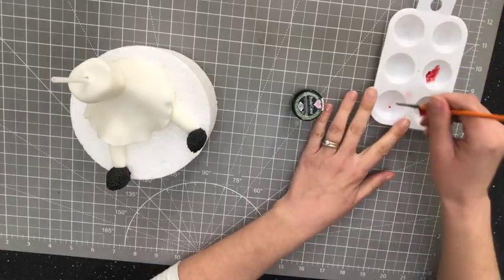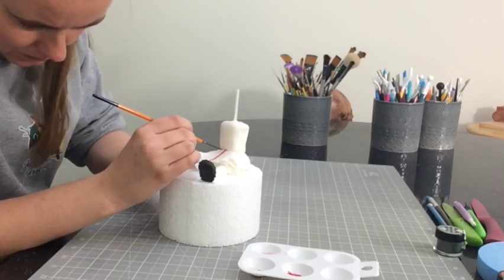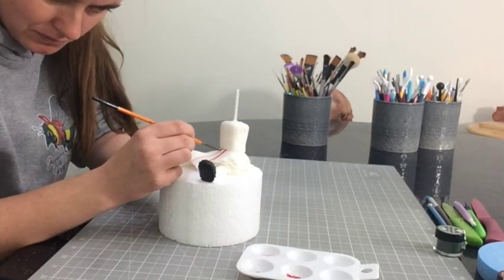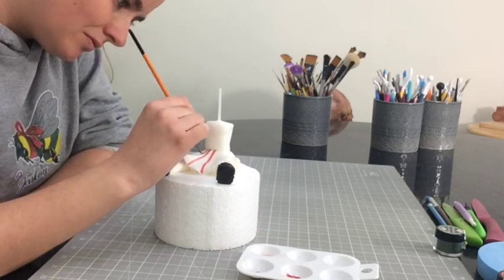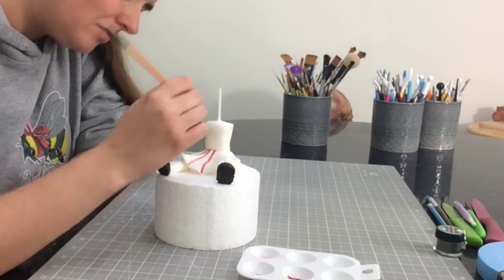Cindy Lou has a stripy pattern on her dress so I make some red paint with rainbow dust and dipping solution and I paint thin lines going down the dress. Then I make some green paint and paint lines going across the dress.